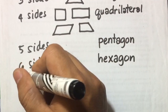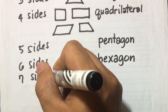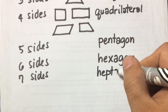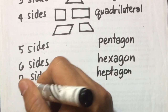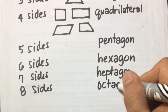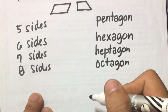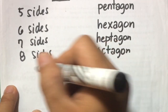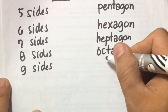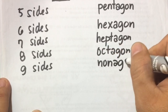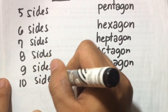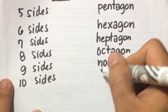Then seven sides — you can name that one as heptagon. Eight sides will be octagon. Then if we're going to have nine sides, that will be called nonagon. Then ten sides will be called decagon.